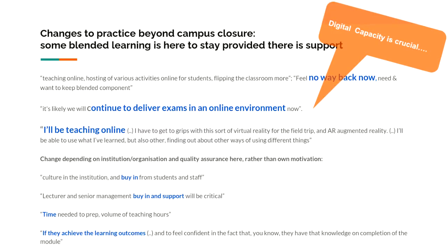We asked them what they would keep after all this, going into a new normal where we're not going back to how things were. There were some interesting comments pointing to how digital capacity would be crucial for ongoing development. Somebody saying 'there's no way back now.' Another person saying 'I will be teaching online, I am going to continue delivering these exams online, not 2,000 students in a room.' But other factors will influence how that goes: institutional and organisational factors, buy-in from staff and students, time needed to prepare, quality assurance — whether the students achieve the learning outcomes will continue to have a bearing.